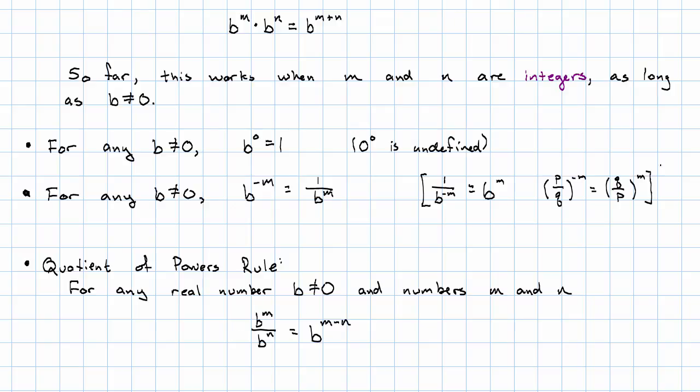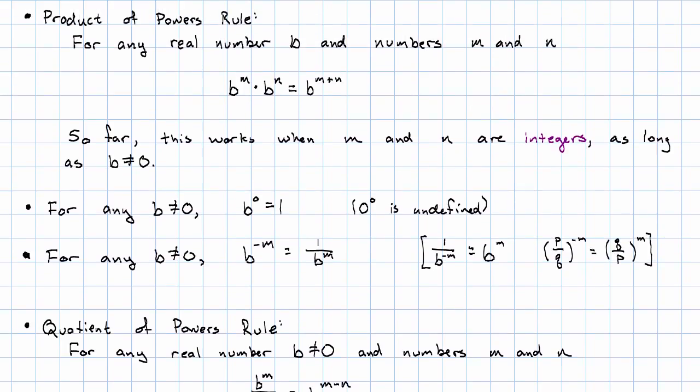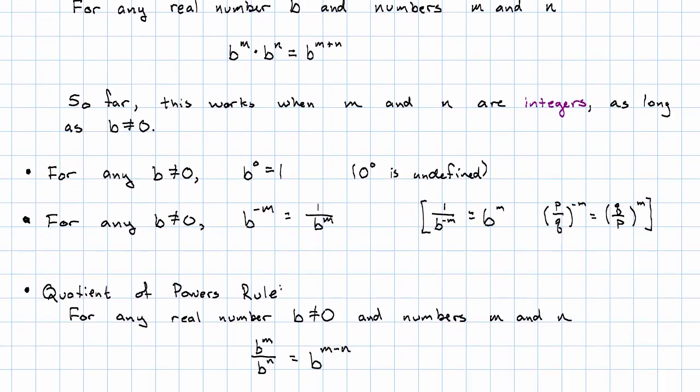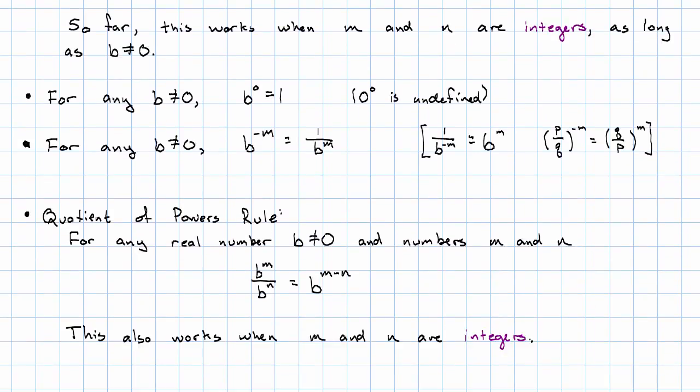Those two rules, the product of powers and quotient of powers, are the two exponent rules we have so far. And so far, we know how to understand integer powers, either positive or negative.